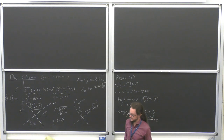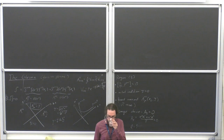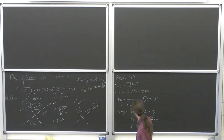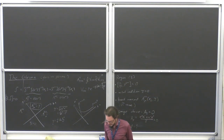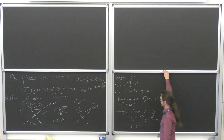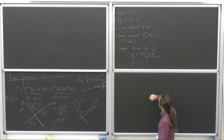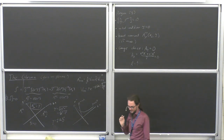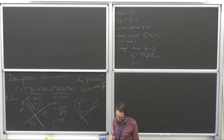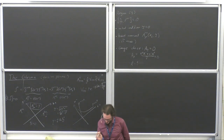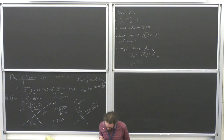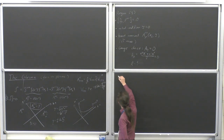Let us do the calculation. This calculation for the initial condition was first done by Kovner, McLerran, and Weigert in 1995. There are two important KMW papers, and this is one of them. The way we will do this is that we will write an ansatz.